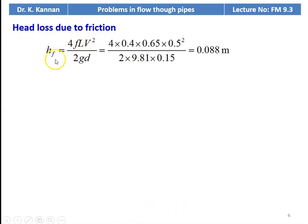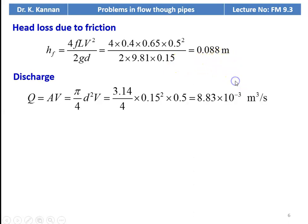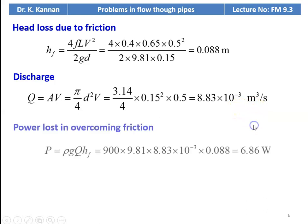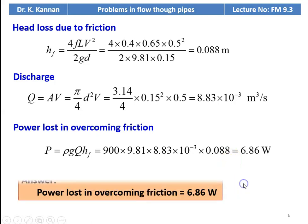The head loss due to friction: HF = 4fLV² / 2gd = 4 × 0.4 × 0.65 × 0.5² / (2 × 9.81 × 0.15) = 0.088 m. Discharge Q = A × V = (3.14/4) × 0.15² × 0.5 = 8.83 × 10⁻³ m³/s. Power loss = ρgQ × HF = 900 × 9.81 × 8.83 × 10⁻³ × 0.088 = 6.86 watts.